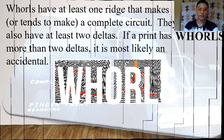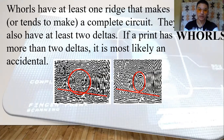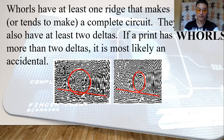The next fingerprint pattern is the whorl. Whorls have at least one ridge that makes a complete circuit and at least two deltas. If a print has more than two deltas, it is most likely an accidental. The distinction is determining whether the fingerprint pattern is a plain whorl or central pocket whorl. We draw a line between the two deltas: if some curved ridges touch the line, it is a plain whorl; if none of the center core touches the line, it is a central pocket whorl.